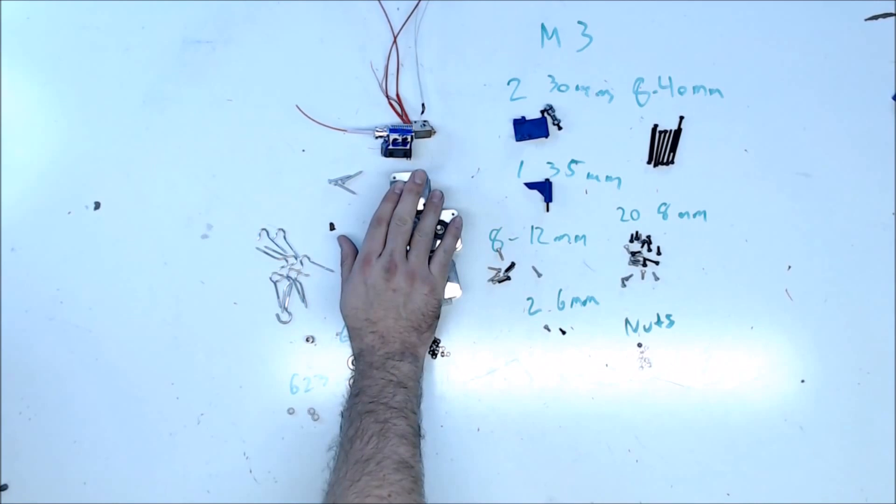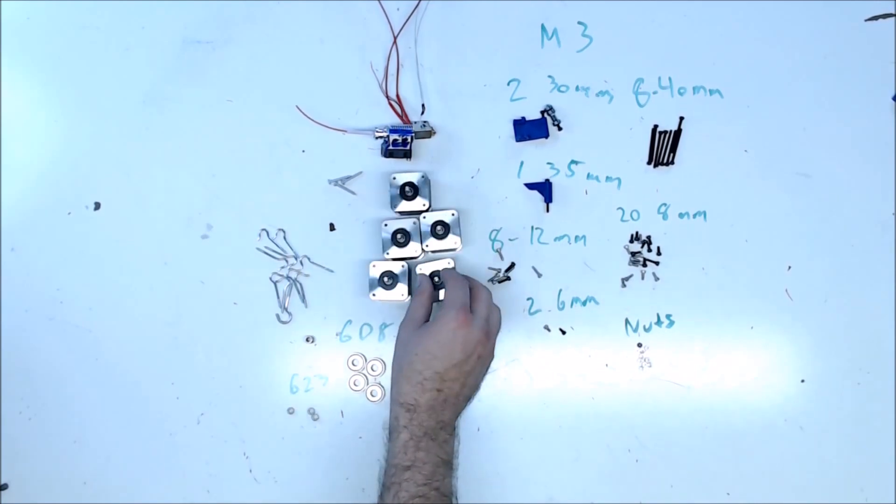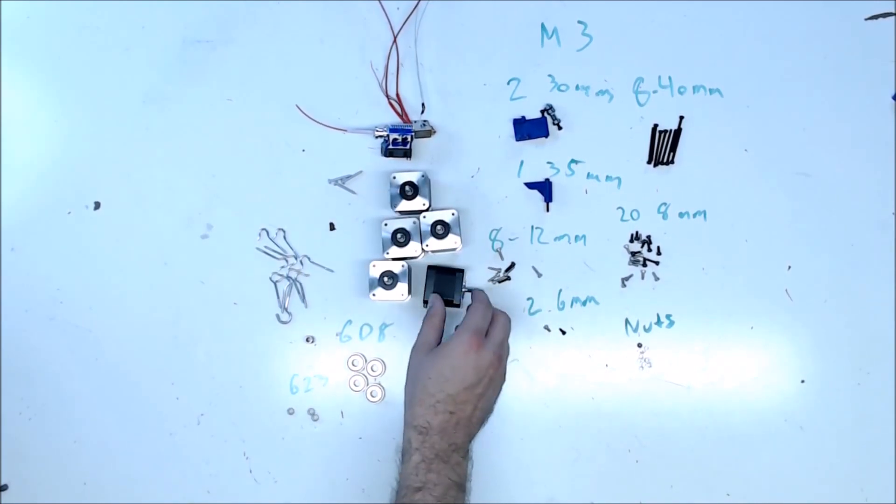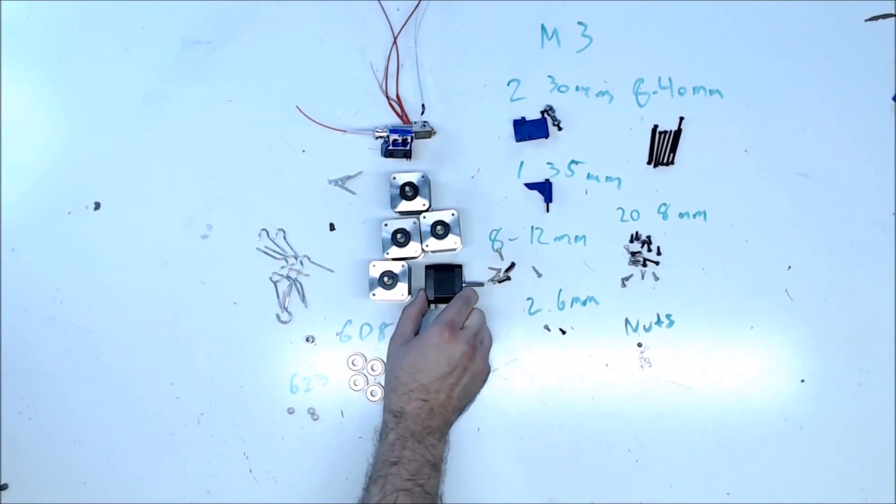You need five NEMA 17 stepper motors. You could use smaller motors for the A, B, and C axis, but the motors can't exceed 38 millimeters in depth, so they won't fit the mounts.